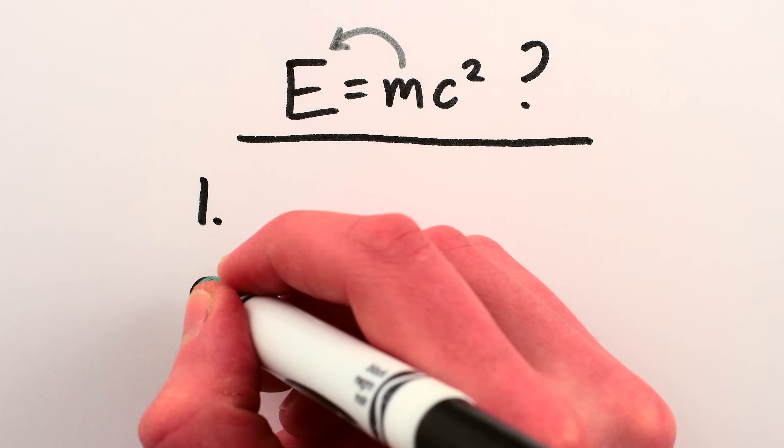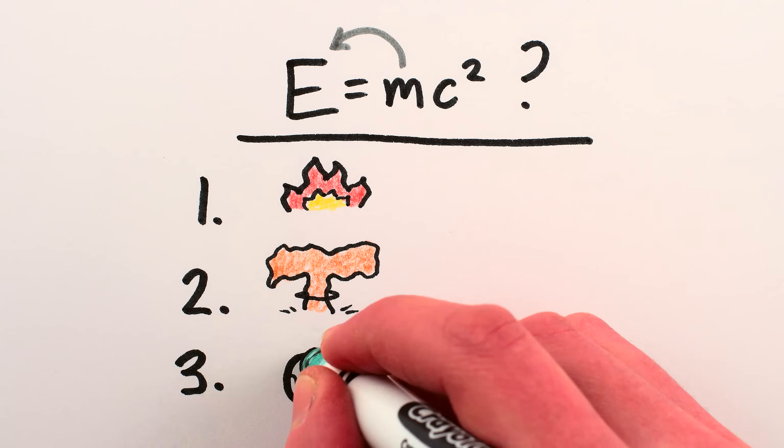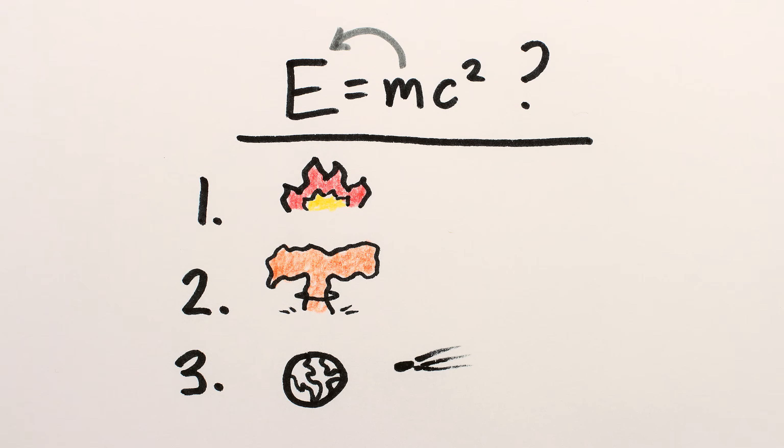Since we can't use anti-matter, there are basically three options left to us: chemical reactions, nuclear reactions, and gravitational reactions, like matter falling into black holes.